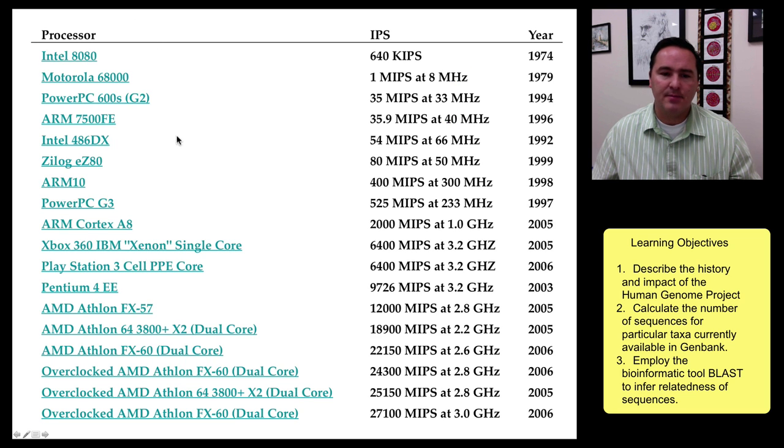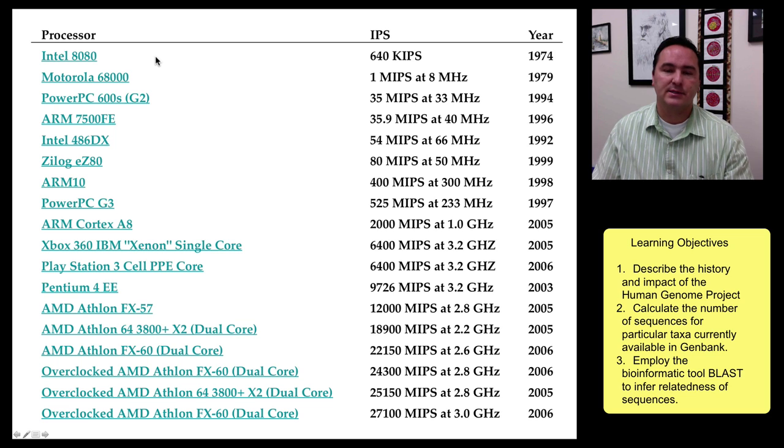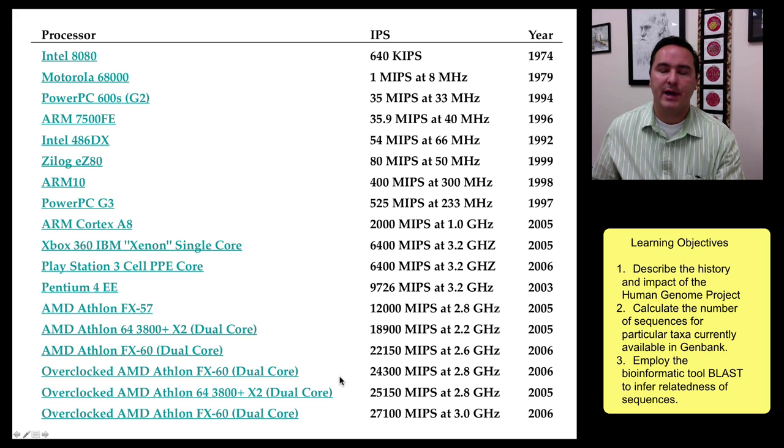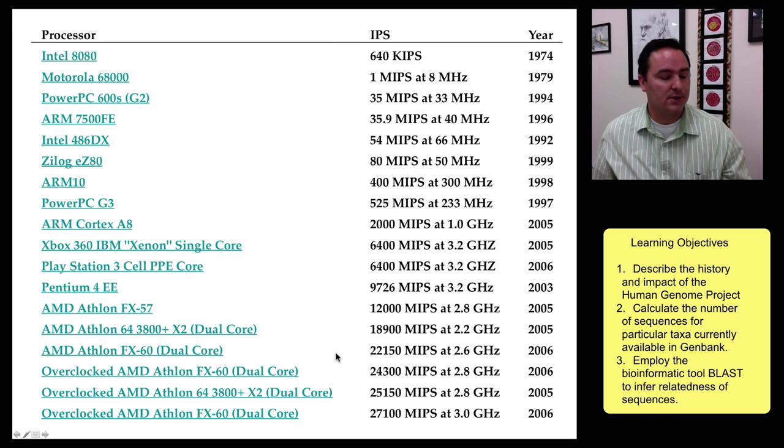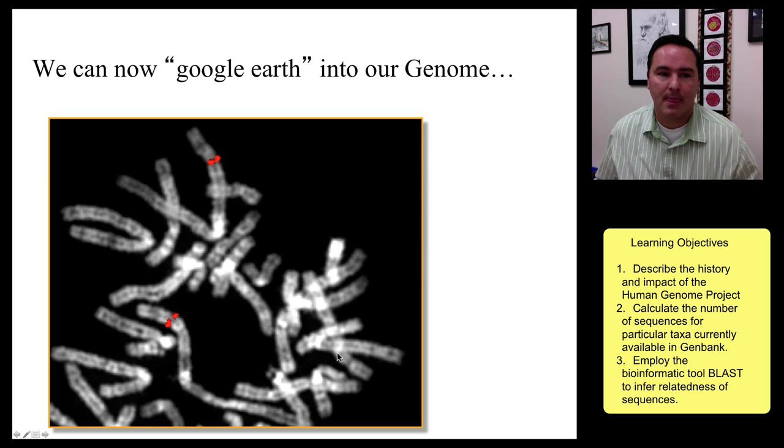Now, the good thing is that at the same time that all of this DNA data generation has been going on at leaps and bounds, we've also had a progress similar in computational power and storage power in computers. And so you know, if you just look over the years, you can see the speed at which computers can now function, and the amount of storage that we can have inside of computers has also greatly increased.